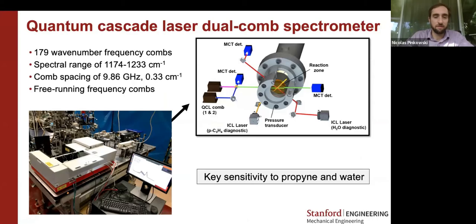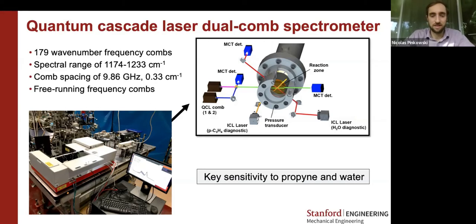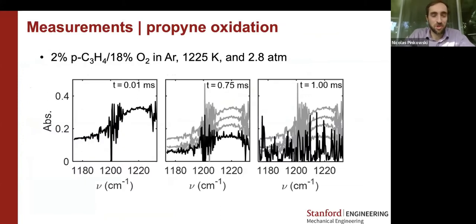For the proof of concept study we used the spectrometer with 179 wavelengths emitted between 1174 and 1233 inverse centimeters. The experimental setup used the two QCL combs superimposed in one beam — we got a reference measurement before sending it to the shock tube, and a sample measurement on the other side of the shock tube after it traversed the diameter of the tube. We also added a bunch of validation diagnostics to compare the dual comb spectrometer results to more standard single-wavelength or scanning-wavelength lasers. We put in a propyne diagnostic, a water diagnostic, and a pressure transducer.